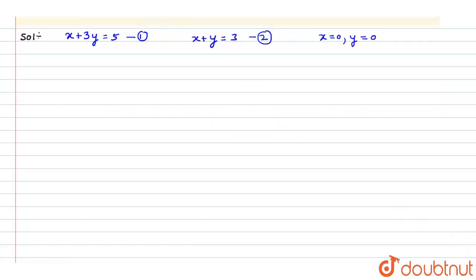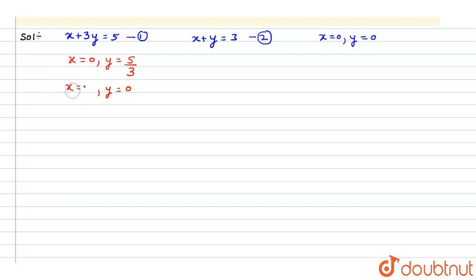Now we have to find the points for equation 1. Put x equals 0 to get y equals 5 by 3. Put y equals 0 to get x equals 5. So the points are (0, 5/3) and (5, 0).